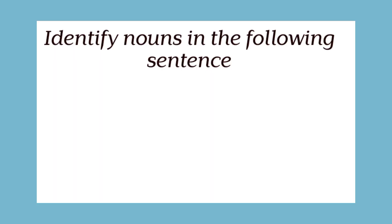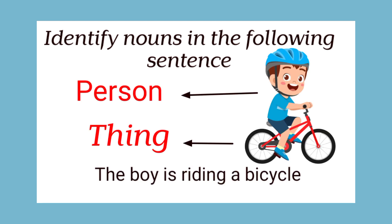Identify nouns in the following sentence. 'Boy is riding a bicycle.' Boy is the name of a person, and Bicycle is the name of a thing.